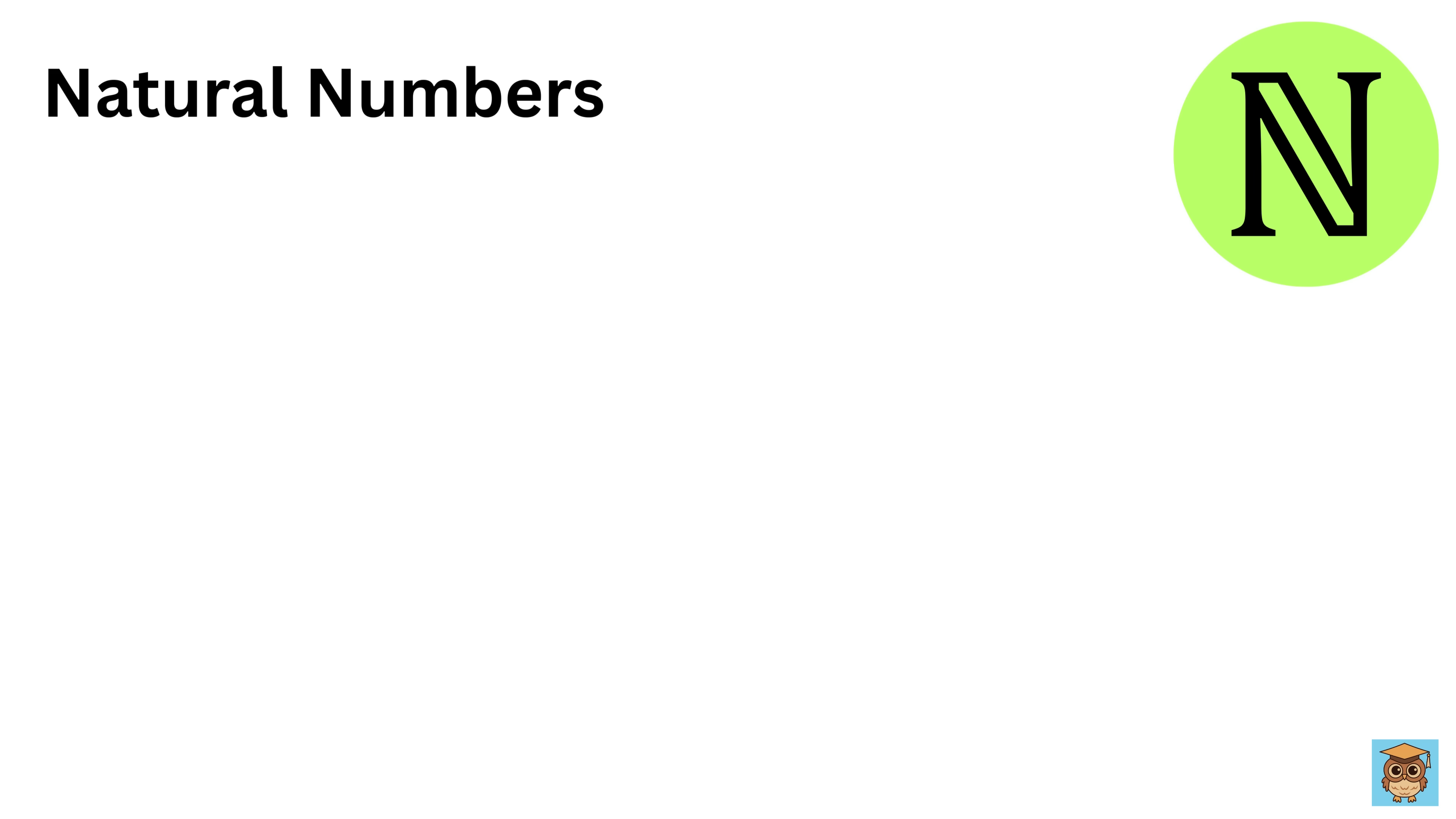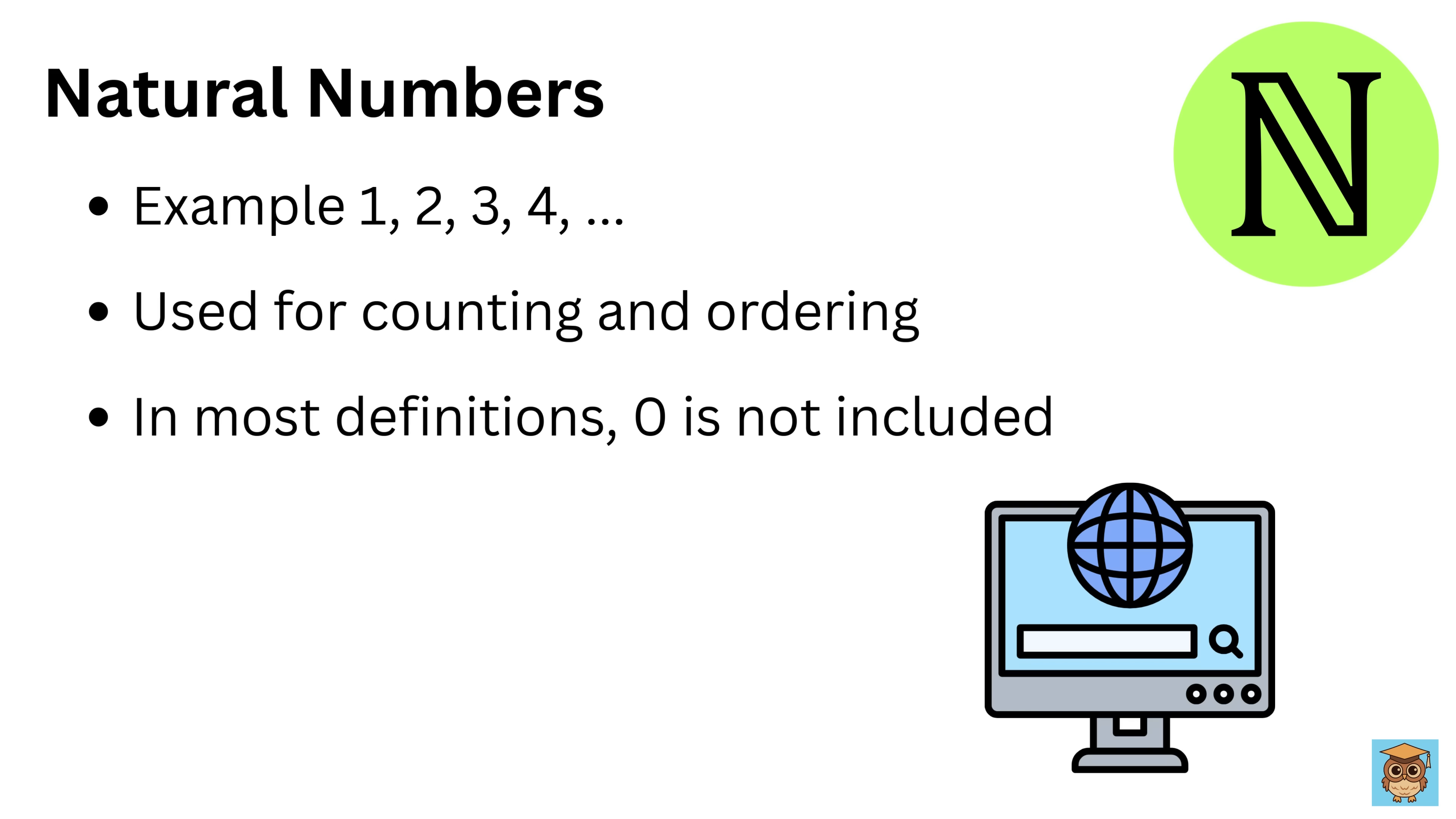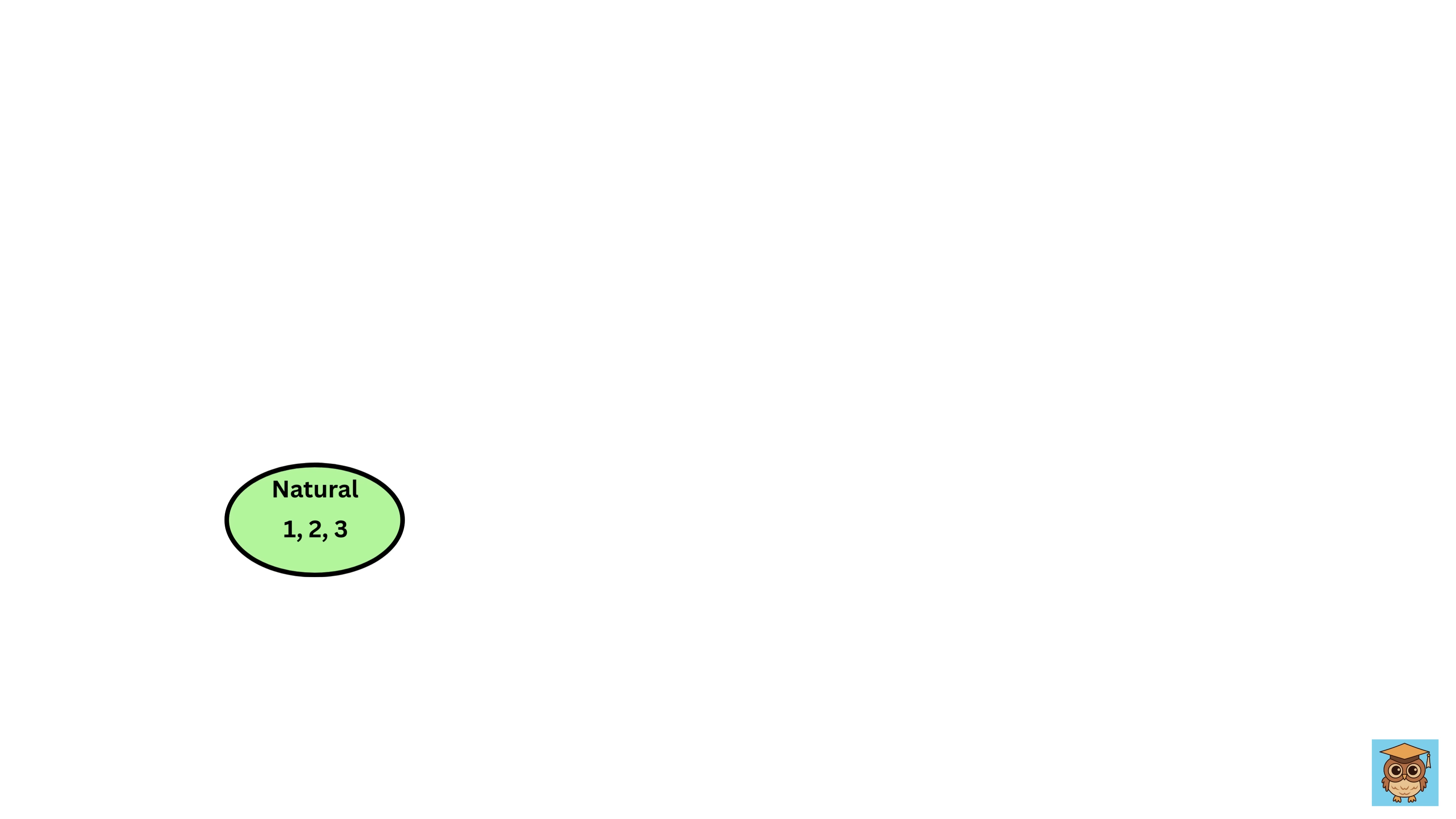Natural numbers are the basic counting numbers like 1, 2, 3, 4, and so on. They are used for everyday counting and ordering. In most definitions, 0 is not included, though some areas like computer science may consider 0 as a natural number. These numbers do not include any negative numbers or fractions.